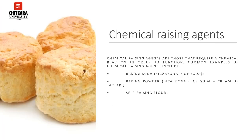Now let's discuss the chemical raising agents. Chemical raising agents are those that require a chemical reaction in order to function. Common examples include baking soda, also known as bicarbonate of soda; baking powder, which is a combination of bicarbonate of soda plus cream of tartar; and self-raising flour. Baking powder is used as a raising agent for a number of doughs and batters such as cakes, puddings, and biscuits.